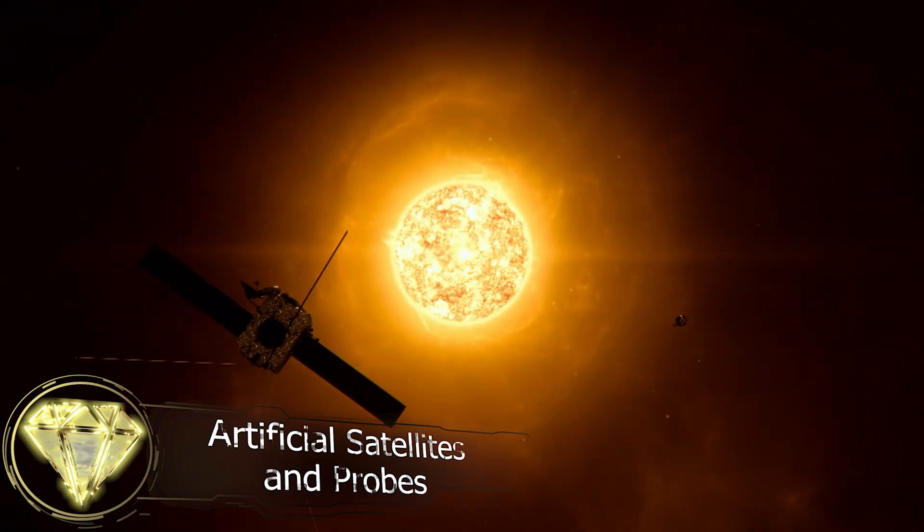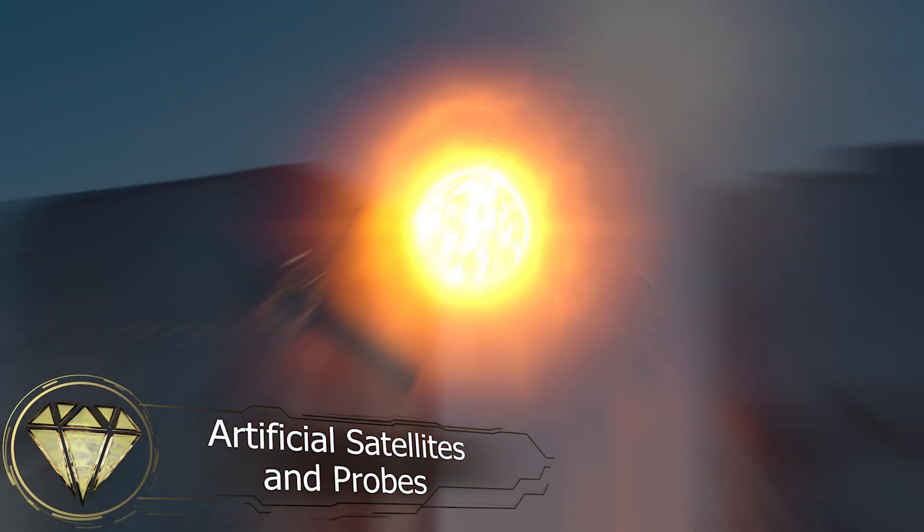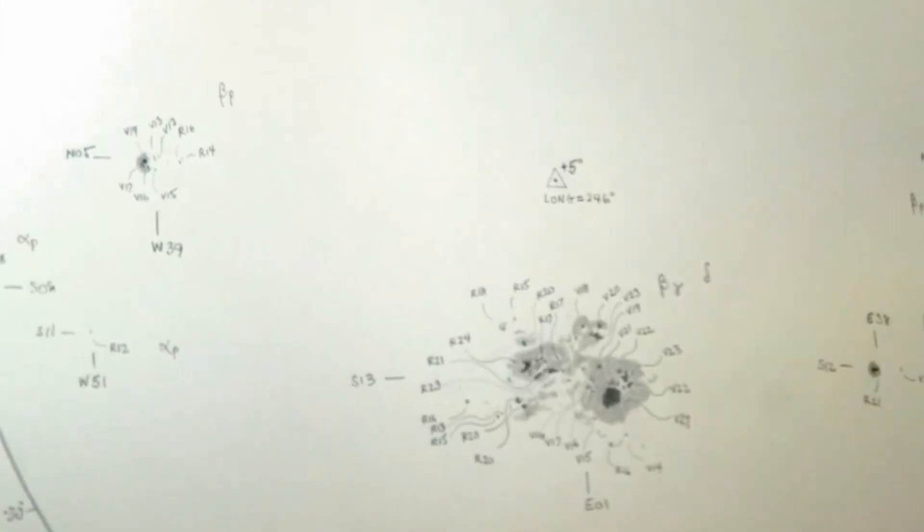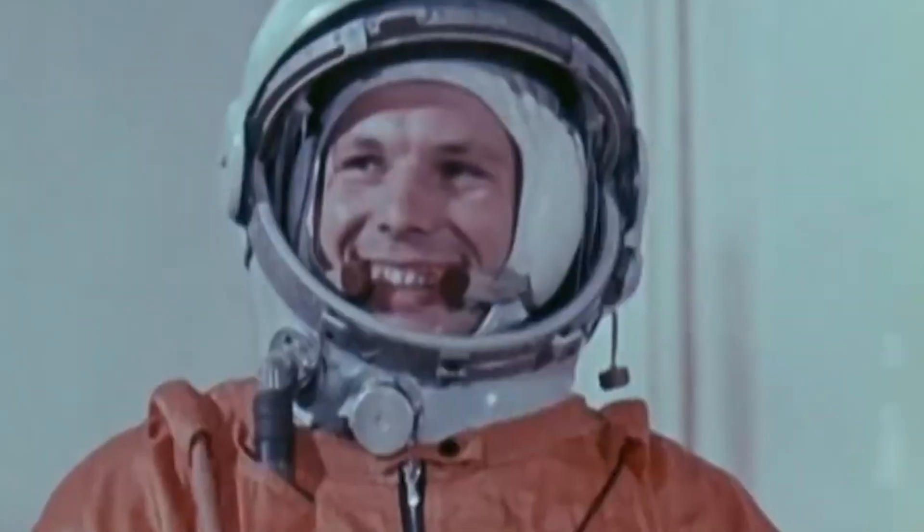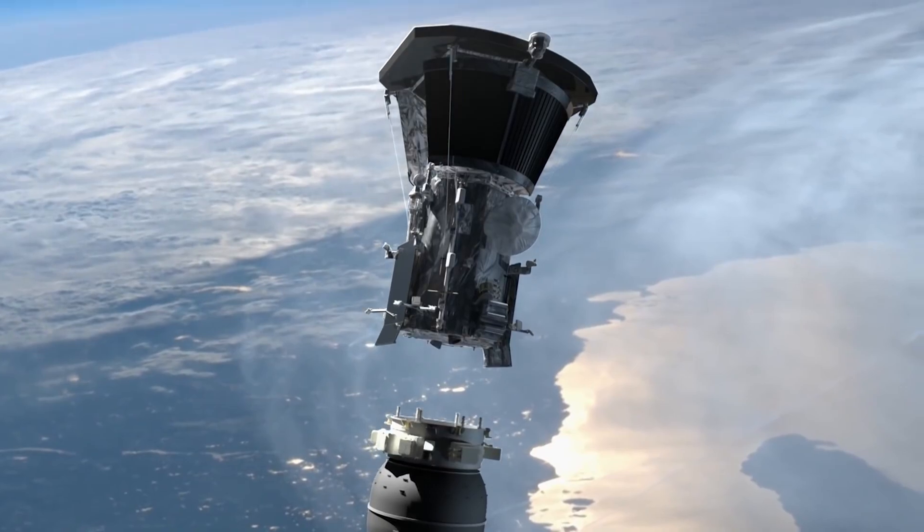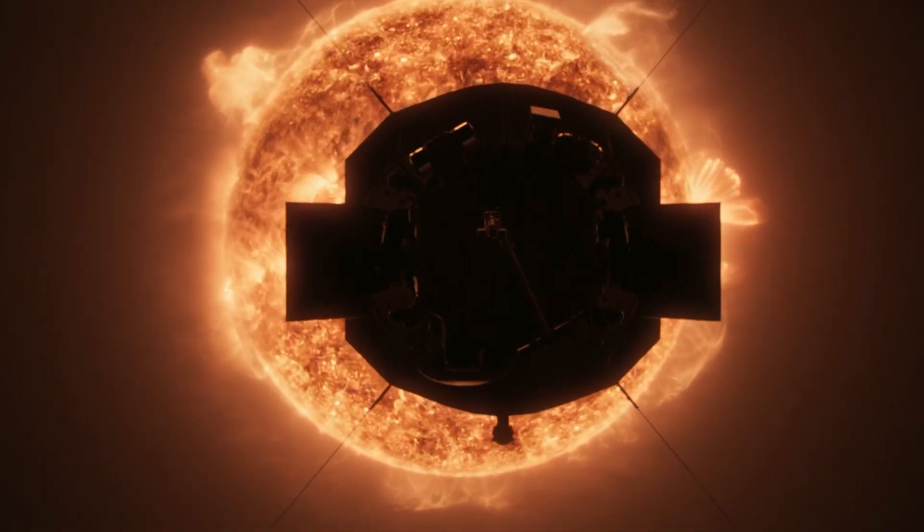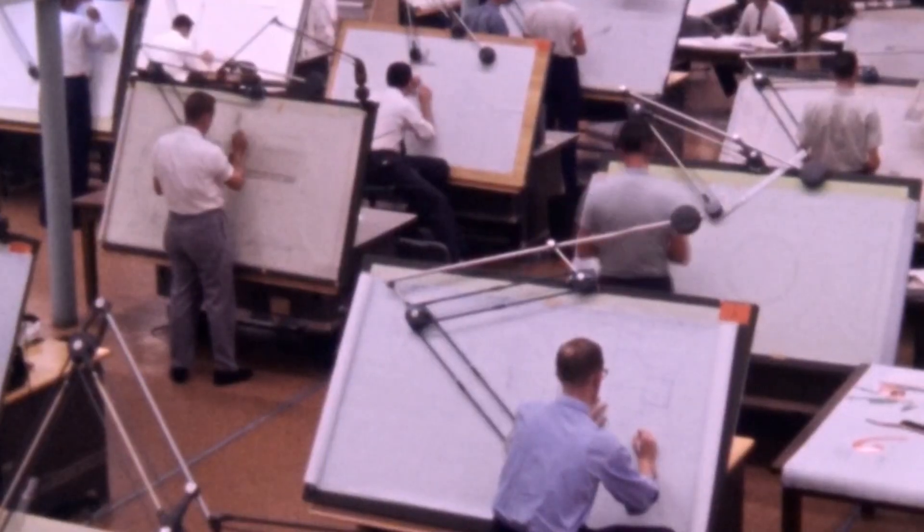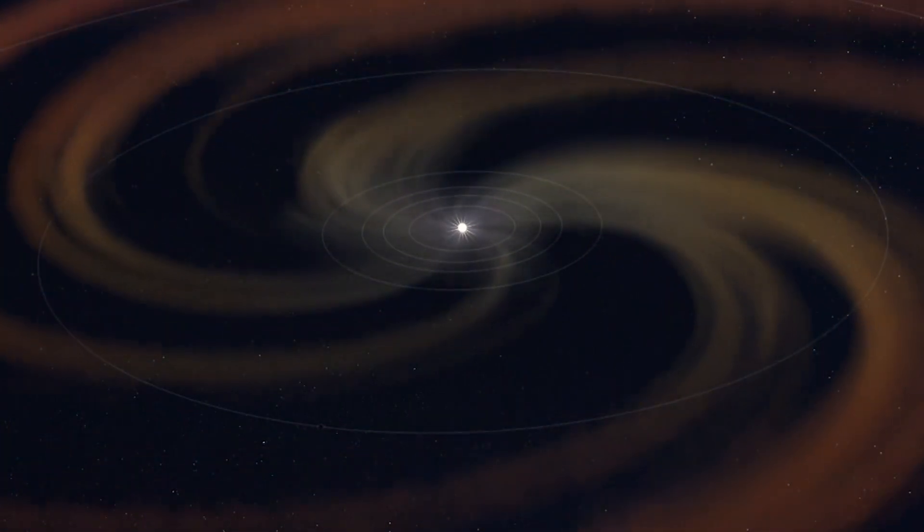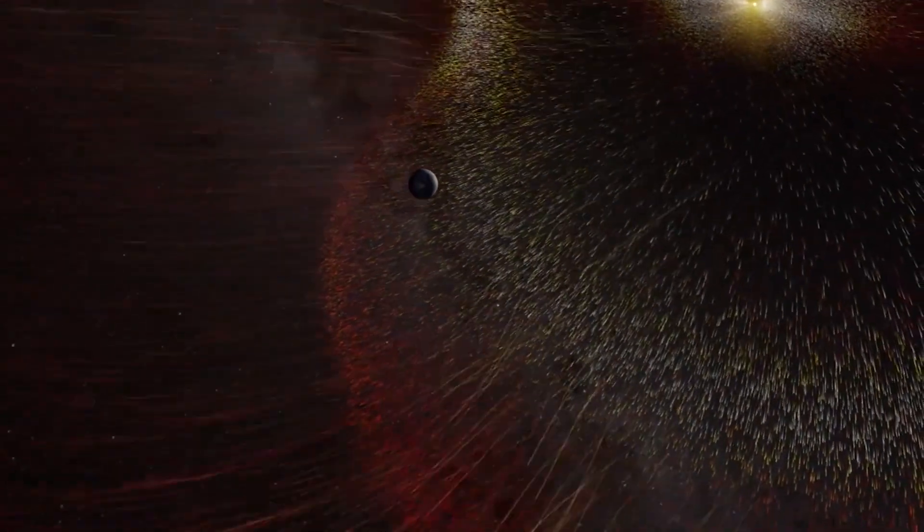Artificial satellites and probes. By the mid-20th century, it was clear that observing from Earth alone had yielded nearly all we could learn with then-current technology. Fortunately, that was exactly when the space age began. With it, solar research entered a new era. The first probes designed explicitly to observe the Sun were the famous Pioneer 6 through 9 spacecraft. One of their main objectives was to study the solar wind, which was still poorly understood at the time.